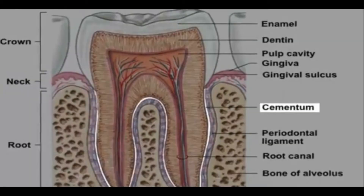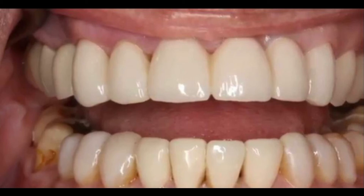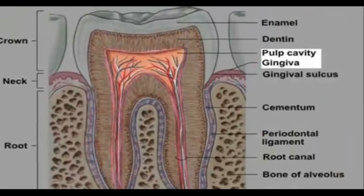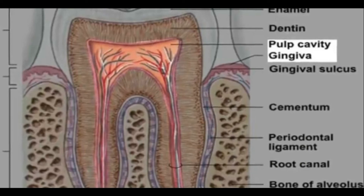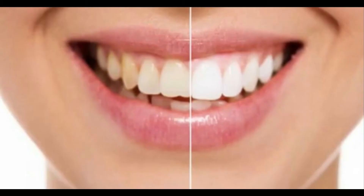Cementum is a specialized bone-like substance which covers the root of a tooth. It is approximately 45 percent hydroxyapatite, 33 percent collagen, and 22 percent water. The dental pulp is the central part of the tooth filled with soft connective tissue. The pulp contains vessels and nerves that enter the tooth from a hole at the apex of the root, and is commonly called the nerve of a tooth.